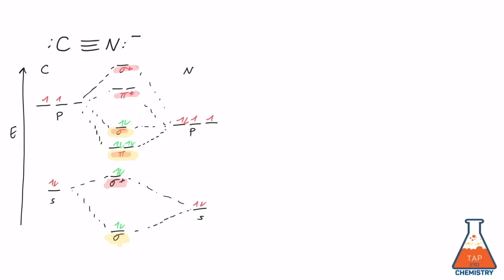This is our MO diagram with the bonding orbitals highlighted yellow and the antibonding orbitals highlighted red. For the bond order,